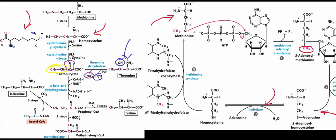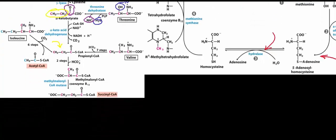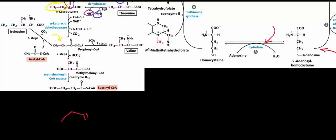Alpha-ketobutyrate reacts with alpha-ketoacid dehydrogenase, and that gives you propionyl-CoA. We've already seen the catabolism of propionyl-CoA; let's draw it out again here. Propionyl-CoA is first going to react with an enzyme called propionyl-CoA carboxylase.